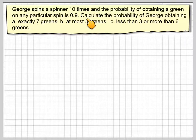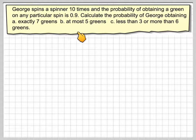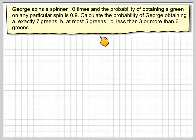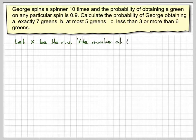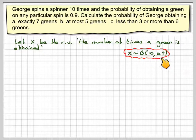George spins the spinner 10 times and the probability of obtaining a green on any particular spin is 0.9. Calculate the probability of: a) exactly 7 greens, b) at most 5 greens, c) less than 3 or more than 6 greens. Let X be the random variable, the number of times a green is obtained. X is binomially distributed with 10 trials and a probability of success of 0.9.